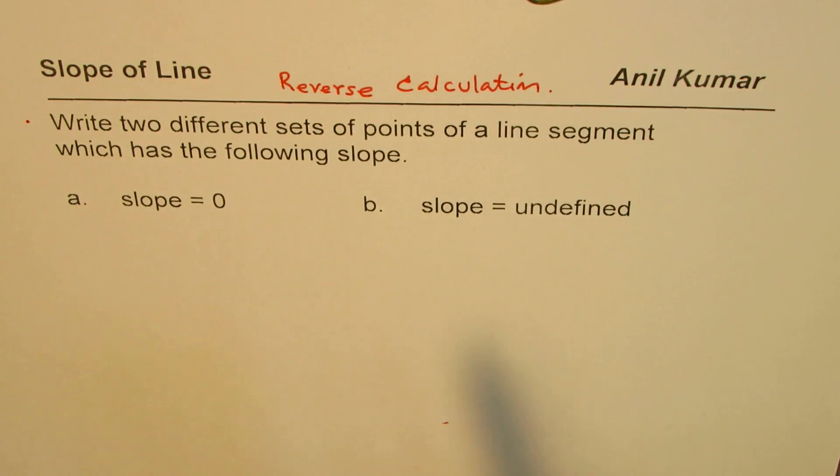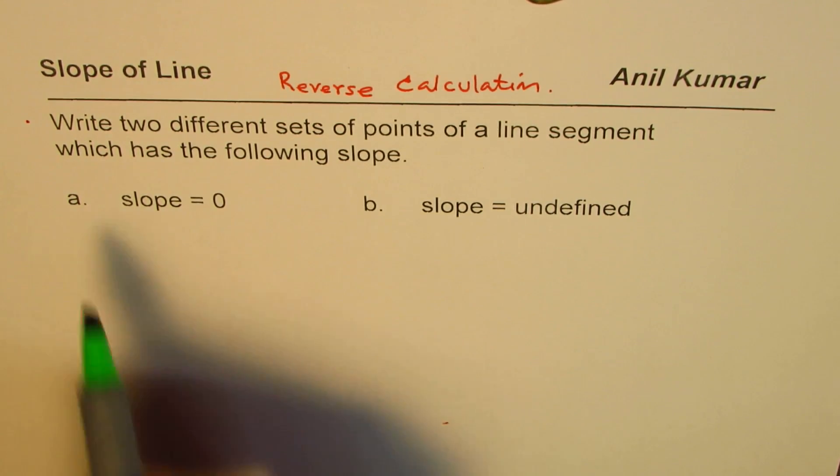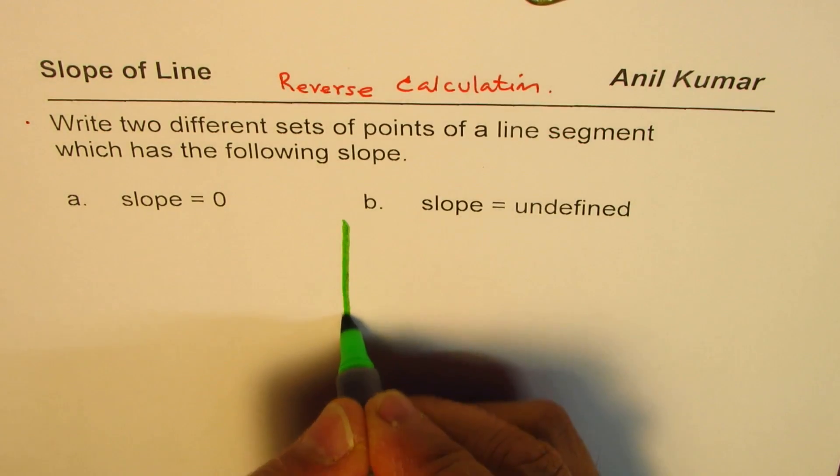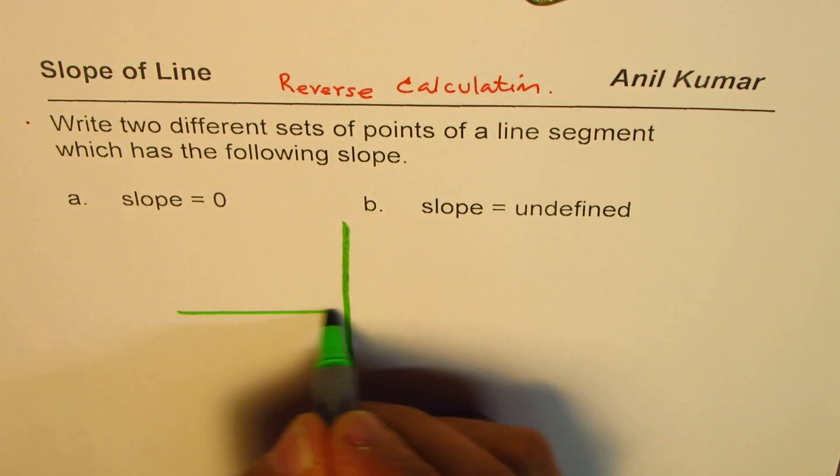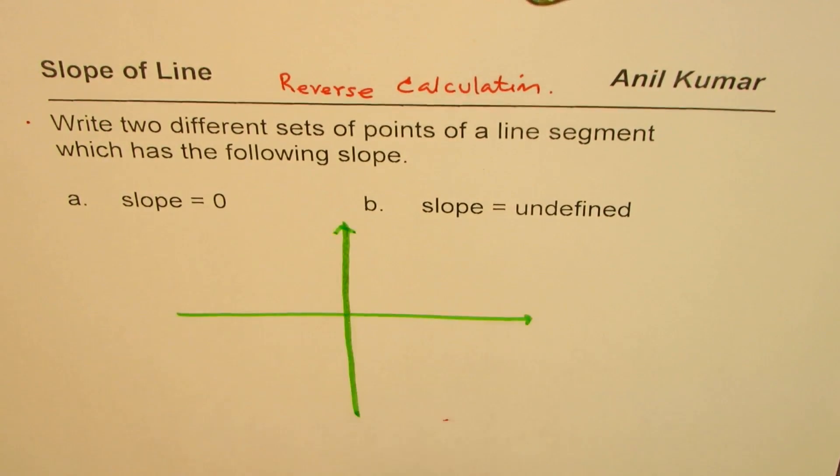Number one, slope is zero, and for the second one we have slope as undefined. These are very special cases for lines. Zero slope means what? An undefined slope means what? You can pause the video, answer the question, and then look into my suggestion.